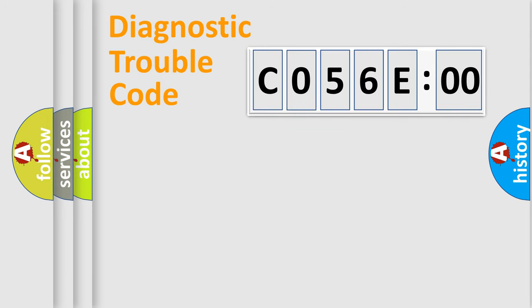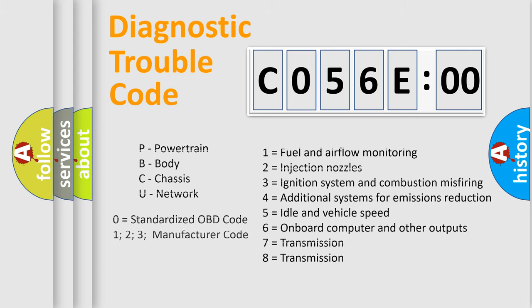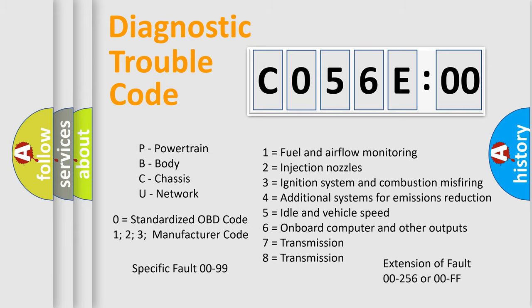For example, a short to ground. Let's not forget that such a division is valid only if the second character code is expressed by the number zero.